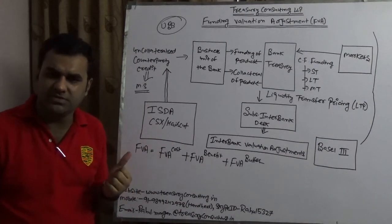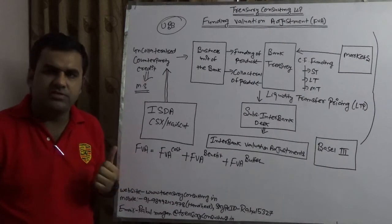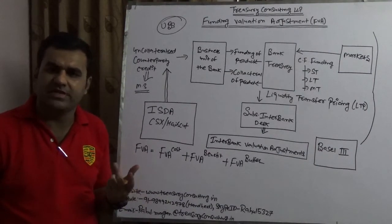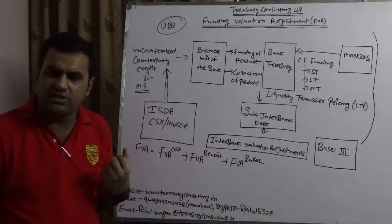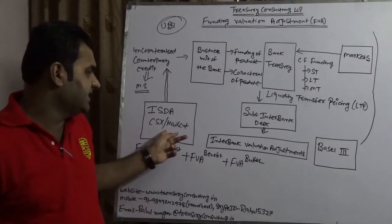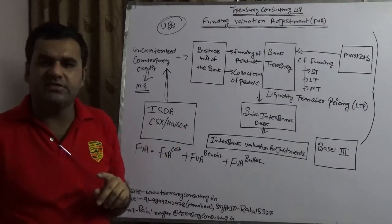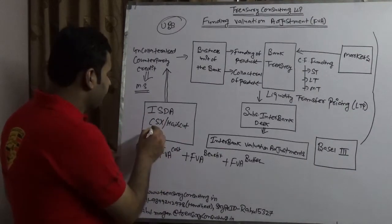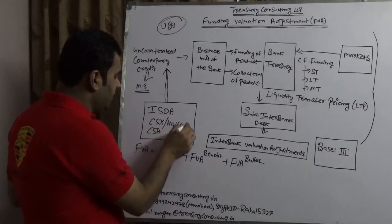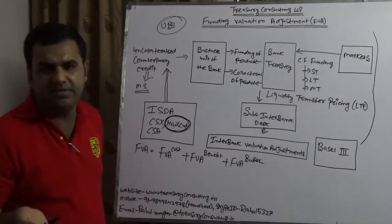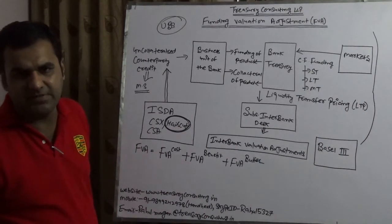One is the ISDA 2002 Master Service Agreement, which cannot be amended; if you need to amend it you sign another document, the annexure. Third is RDS, the Risk Disclosure Statement. Fourth is CSX. CSX stands for Credit Support Annex, which some people also refer to as CSA. There is a haircut provision in the CSX, and there are multiple ways it can be designed.